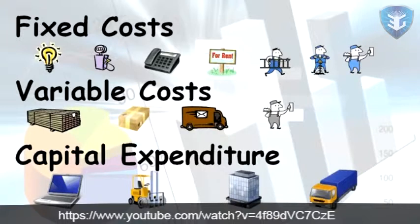Businesses also spend money on things that don't fit into either fixed or variable cost categories — things that aren't used up straight away, like equipment, machinery, buildings, and vehicles. These are categorized under capital expenditure. At first, you might assume these should be classified as fixed costs, but they are not actually costs at all, because purchasing them doesn't reduce the business's profit — the business has simply swapped one form of value for another.